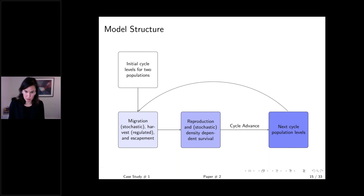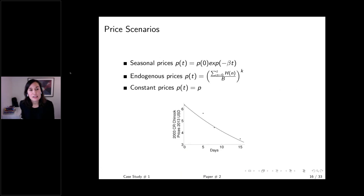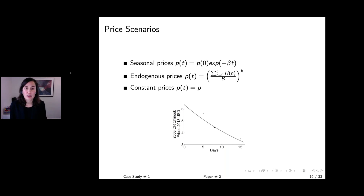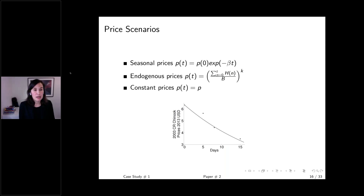We look at results under three price scenarios: seasonal prices where prices are not a function of harvest quantity in the Copper River (exogenous seasonality); endogenous prices capturing regional branding where prices are a function of what's being harvested; and a baseline of constant prices. All price equation parameters are fit from the one season with high-frequency price data.